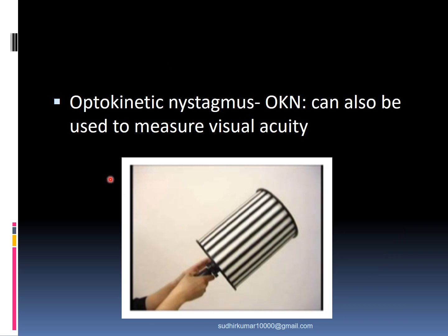Optokinetic nystagmus can also be used to measure visual acuity. One object moves in one direction, then vanishes and is replaced by the same pattern moving again — while rotating, the eye will keep moving like a pendulum in slow and fast phases. If the patient's eye moves along with the optokinetic stimulus, it means they are seeing it; if they lose interest, they may not be seeing that stimulus.